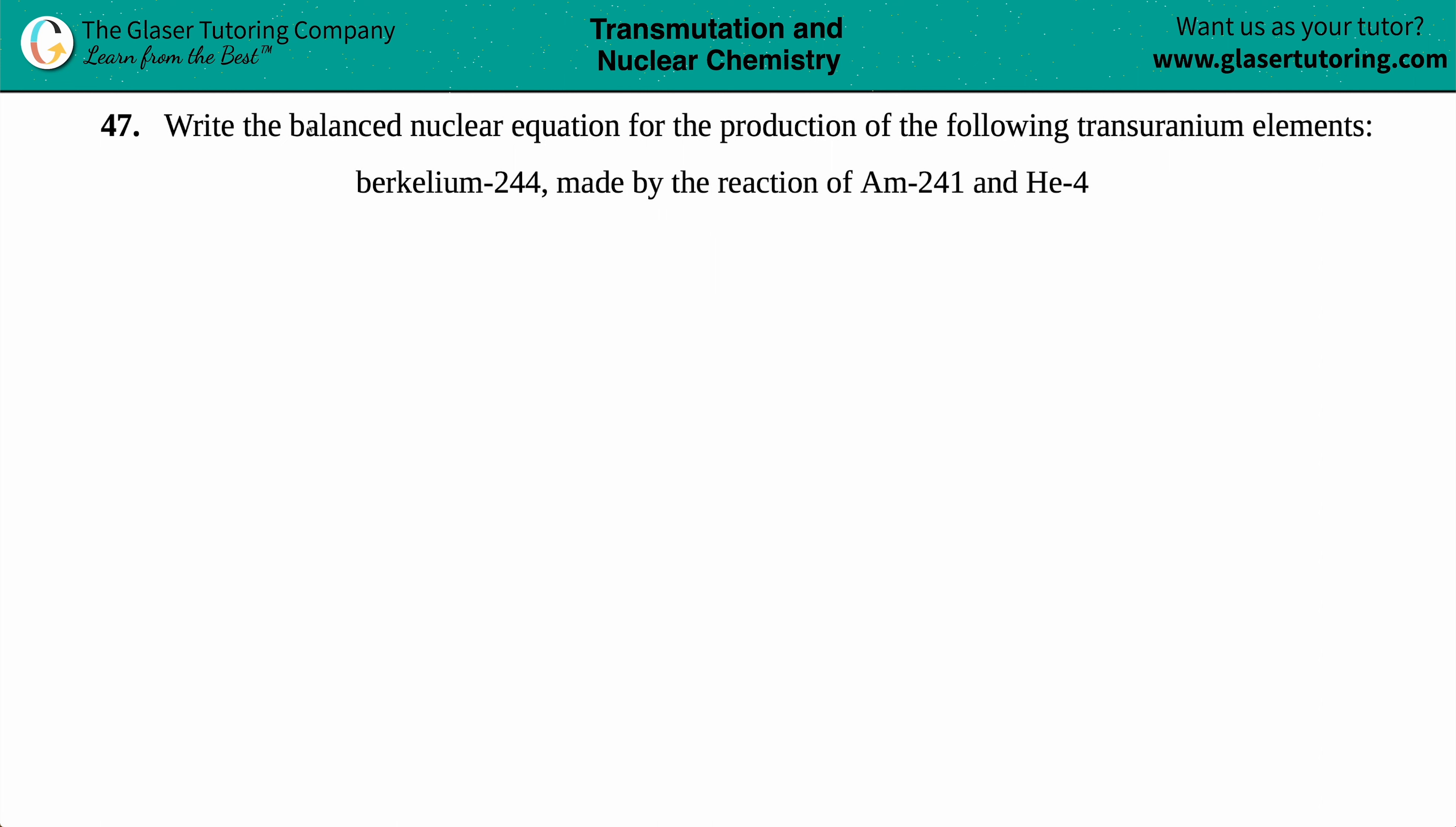Number 47. Write the balanced nuclear equation for the production of the following transuranium elements. Okay, so we have berkelium-244, which is made by the reaction of Am-241 and helium-4.